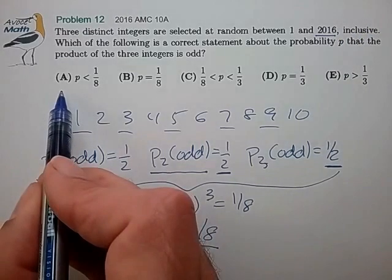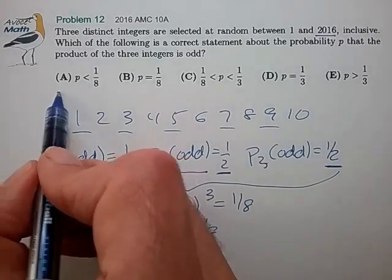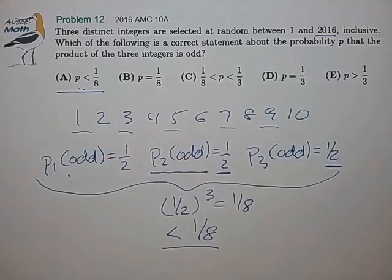And we quickly see that the answer is choice A, the probability is less than 1 eighth. Anyway, a slightly tricky probability question, but interesting one nonetheless. Take care, we'll see you at the next video. Bye-bye.